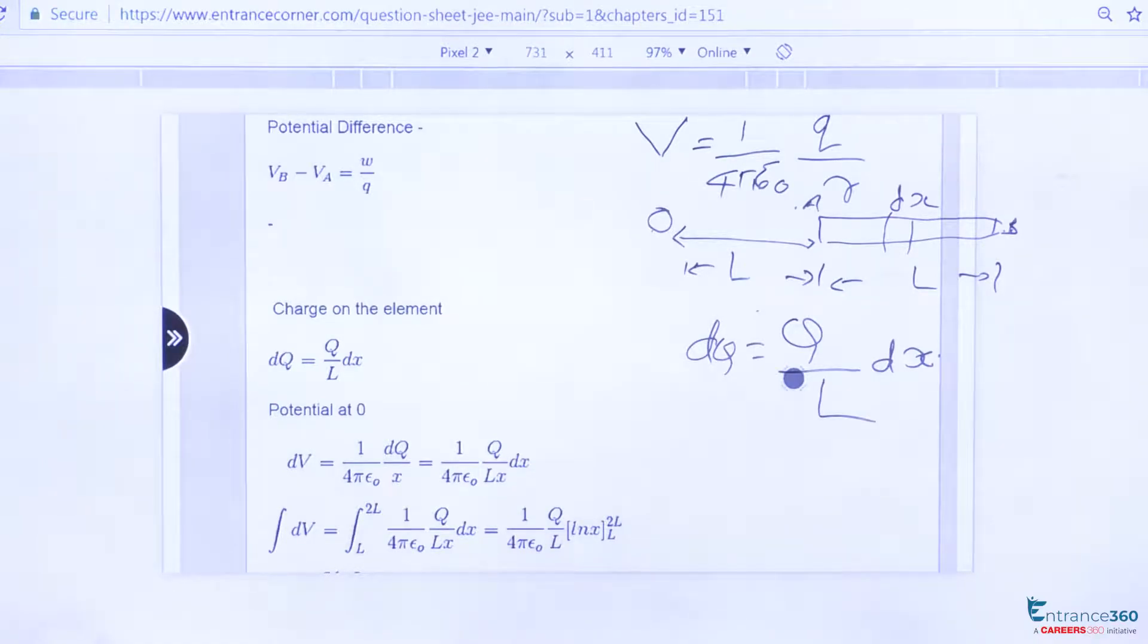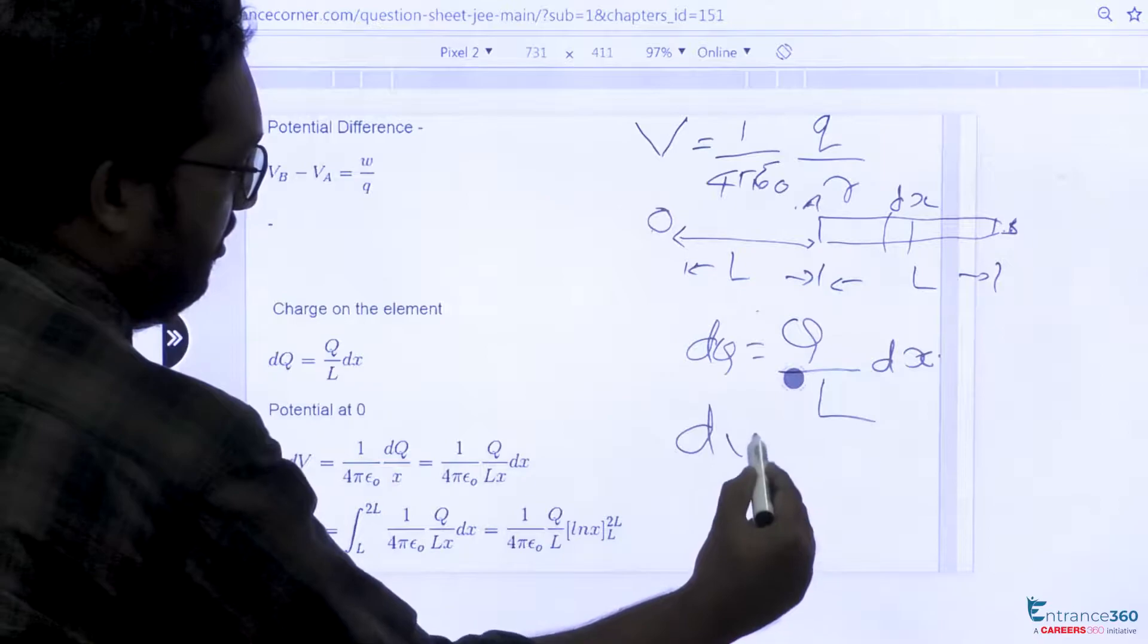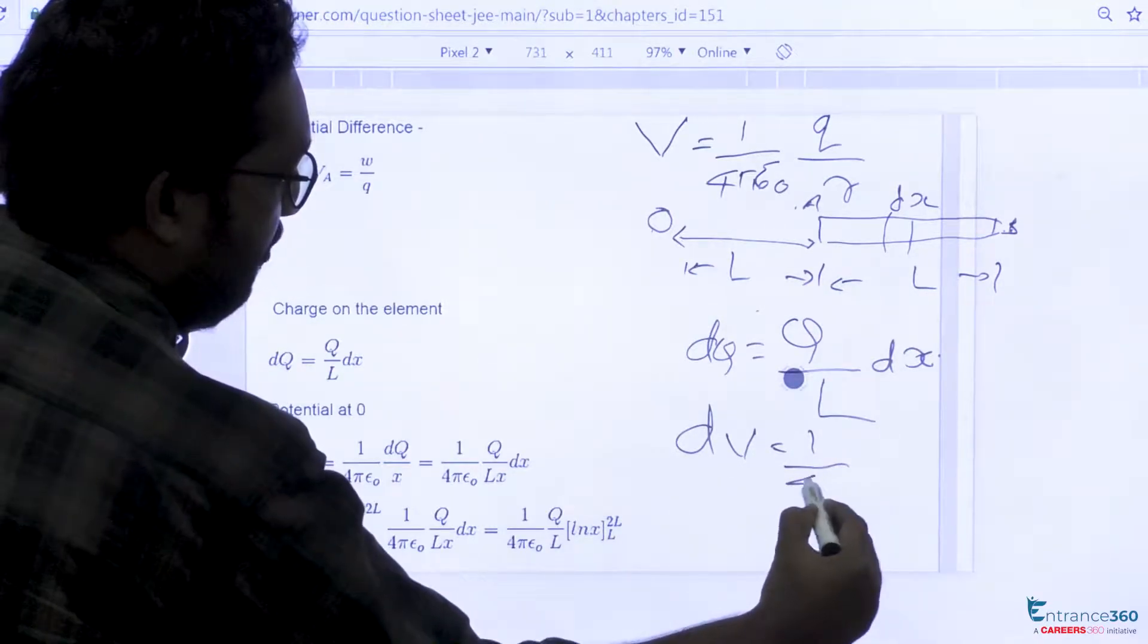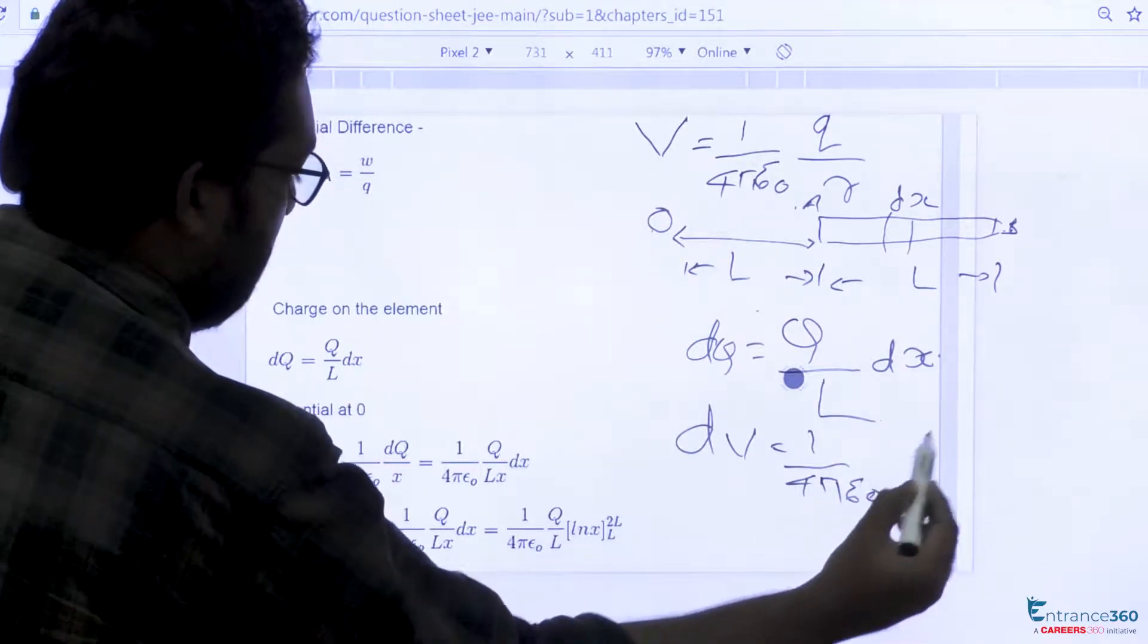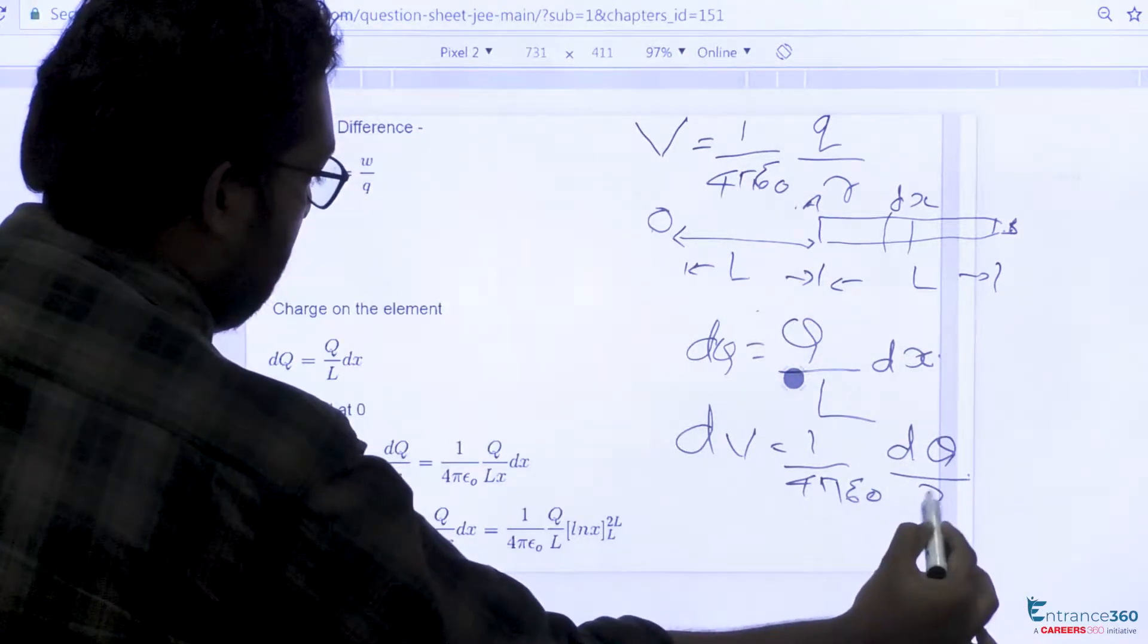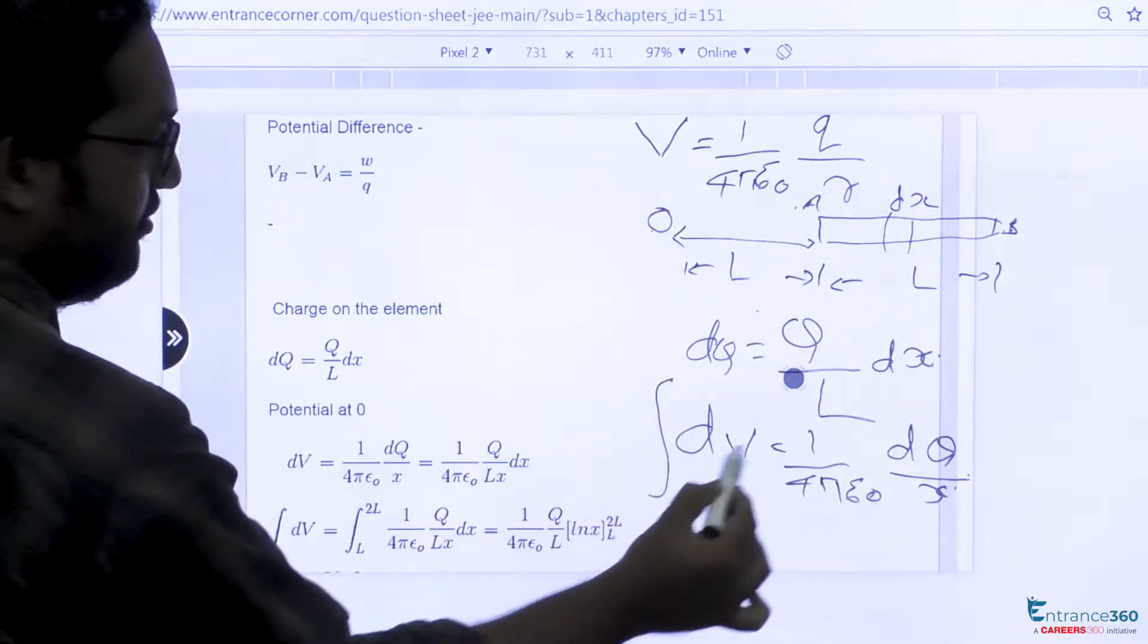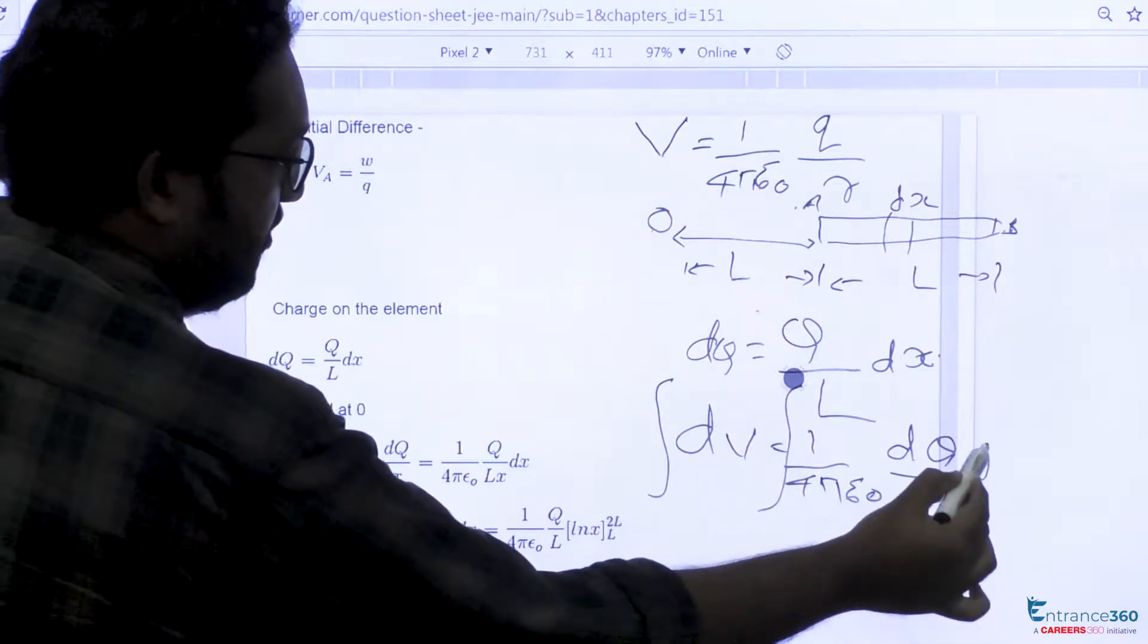So we have to find potential at O. We know that potential is 1 by 4π epsilon zero into Q by distance. So for getting the total potential we can integrate this with respect to x.